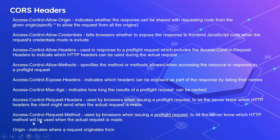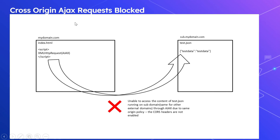There is also an Origin request header that states the actual origin of the request. For the cross-origin Ajax scenario: I have mydomain.com with index.html, and sub.mydomain.com with test.json returning sample JSON data. From index.html I am trying to do an Ajax call through XMLHttpRequest. Based on the default security policy this access will be blocked because it is a cross-origin request - even a subdomain is considered cross-origin - and the Ajax request will be blocked since no CORS headers are enabled.